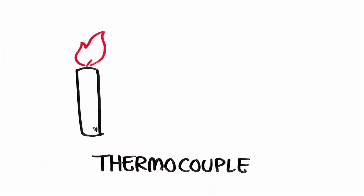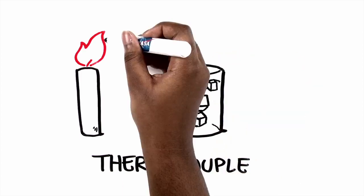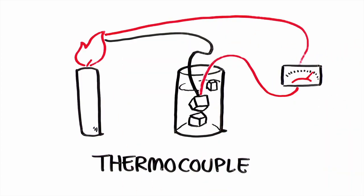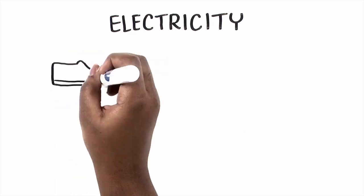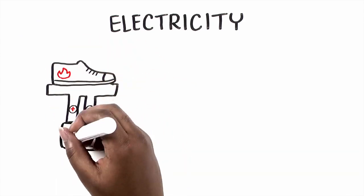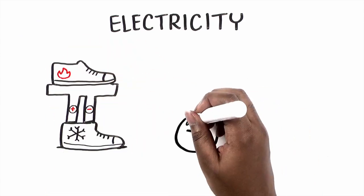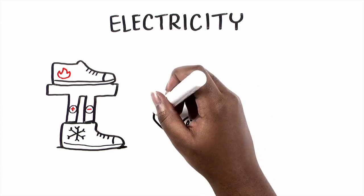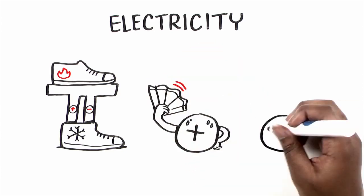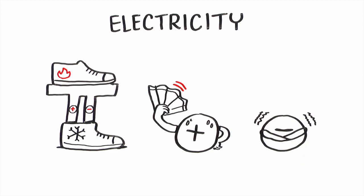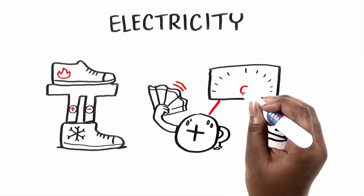Engineers use this material in devices called thermocouples which are used to generate electricity. One of the thermocouple's shoes is hot and one is cold. This heat transferred across a big temperature difference makes electrical charges flow from the hot shoe to the cold shoe and produces an electrical voltage, and this generates useful electrical power.